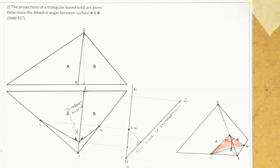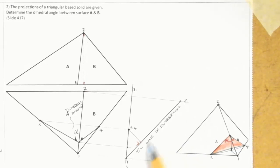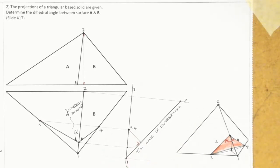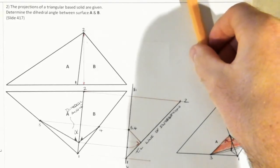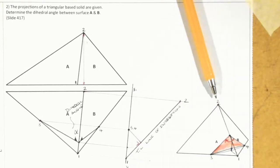Another method we could use, if you didn't like the rebatment method, is the auxiliary views method. That is essentially where we do two auxiliaries. We've already got one done — the true length of the line of intersection. To complete it using the auxiliary views method, we need to see the line of intersection as a point view. And the only way to see the line of intersection as a point view is to look down along the line.